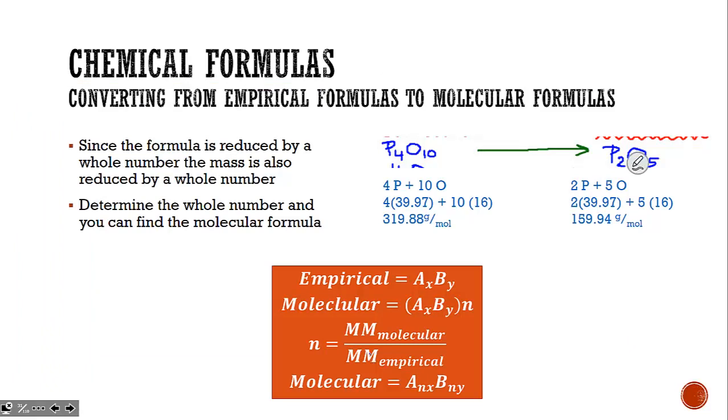Going from empirical formula back to molecular formula requires more work. You have to determine what number was extracted when they reduced it. Empirical and molecular formulas are related by their molar masses. Taking the molar mass of the molecular formula and dividing by the molar mass of the empirical formula tells us what factor they pulled out.